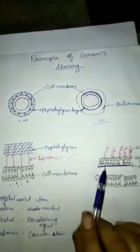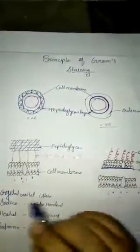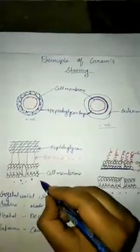These are the molecules of crystal violet. In Gram negative it can also pass easily and enter inside the cells. When we apply iodine it can also pass in both the cells and get inside.